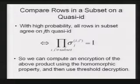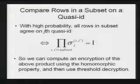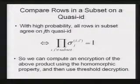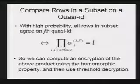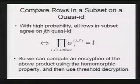This observation is: with high probability, all those in the subset agree on the j-th core ZID if and only if the product of these sigmas is equal to 1.